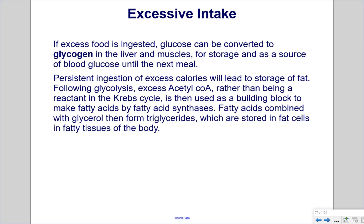Excessive intake. If excess food is ingested, glucose can be converted into glycogen in the liver and muscles for storage and as a source of blood glucose until the next meal. Persistent ingestion of excess calories will lead to storage of fat. Following glycolysis, excess acetyl coenzyme A, rather than being a reactant in the Krebs cycle, is used as a building block to make fatty acids by fatty acid synthases. Fatty acids combine with glycerol to form triglycerides, which are stored in fat cells and fatty tissues of the body.